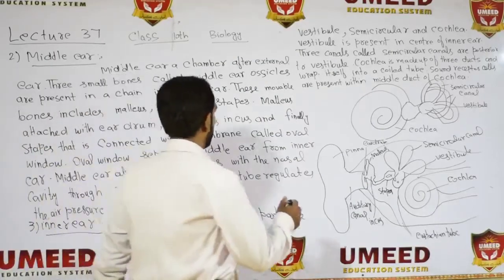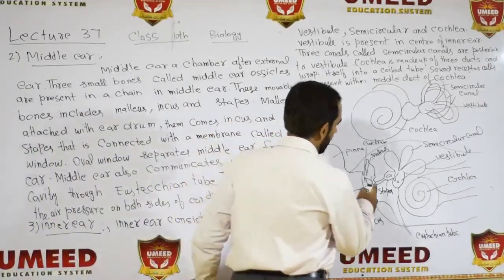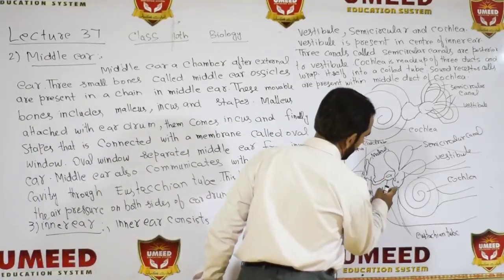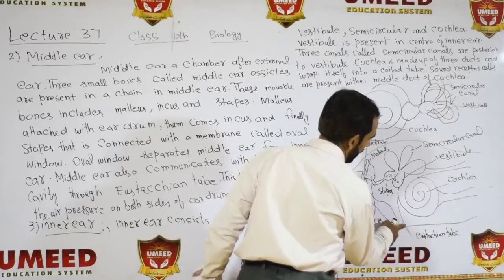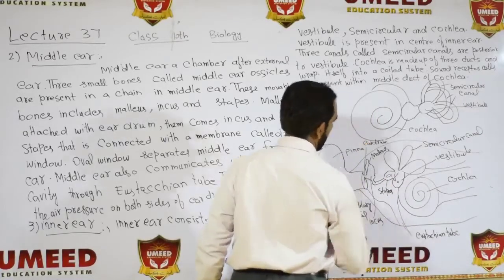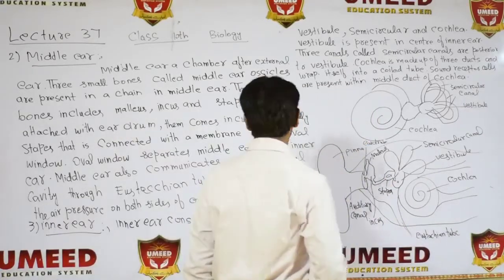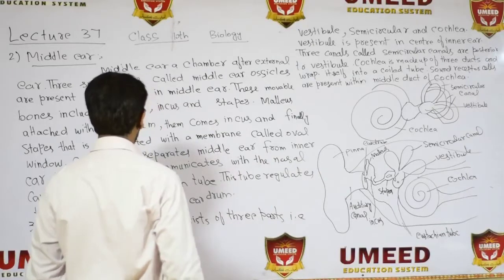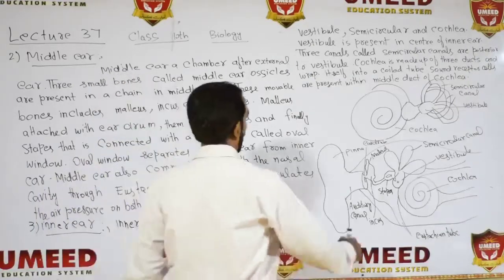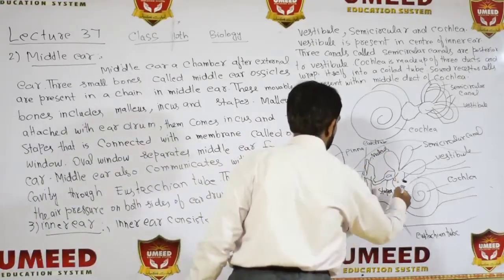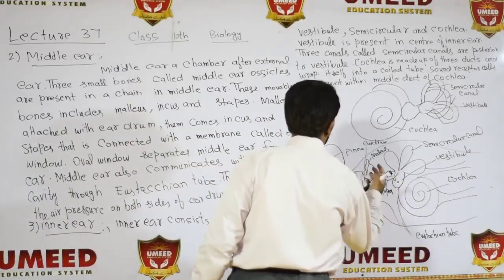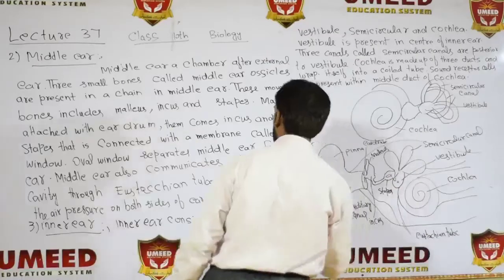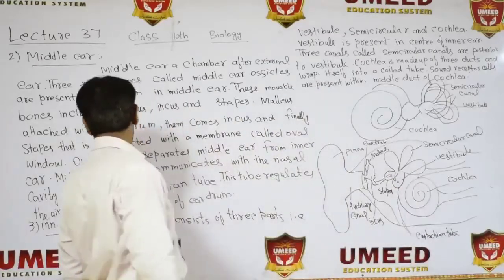The Stapes is contacted to a membrane called the Oval Window. These Stapes are related to this membrane. The Oval Window separates the middle ear from the inner ear.